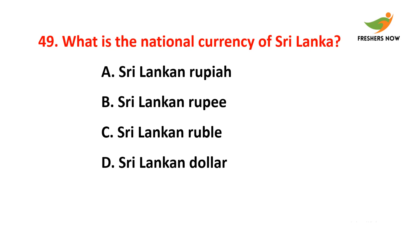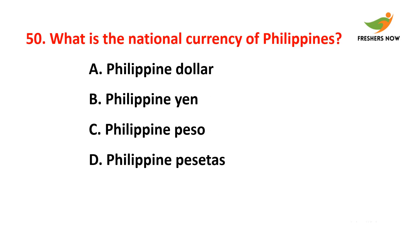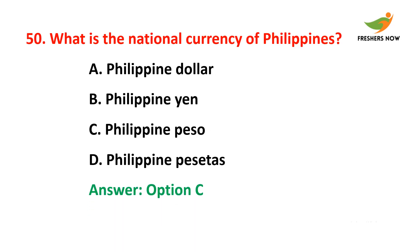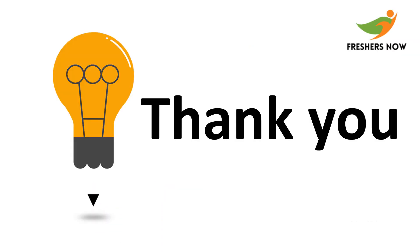Forty-eighth question: What is the national currency of Peru? The answer is option D — Peruvian nuevo sol. Forty-ninth question: What is the national currency of Sri Lanka? The answer is option B — Sri Lankan rupee. Fiftieth question: What is the national currency of Philippines? The answer is option C — Philippine peso.